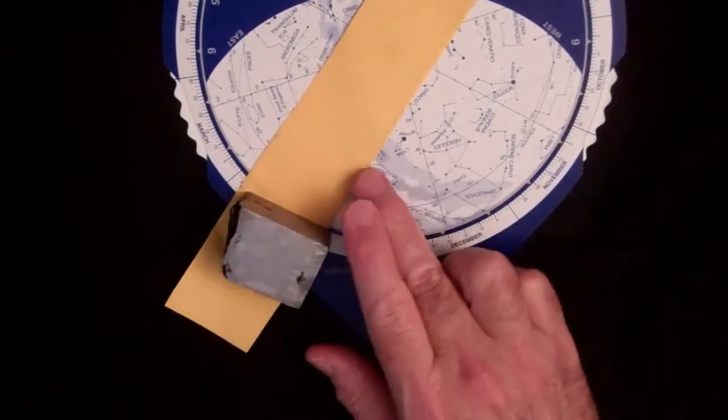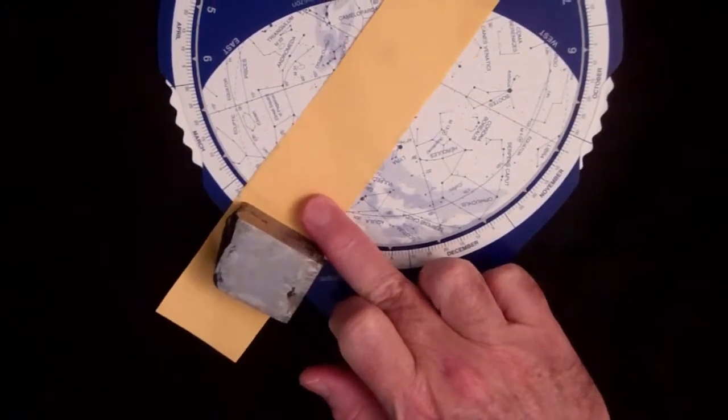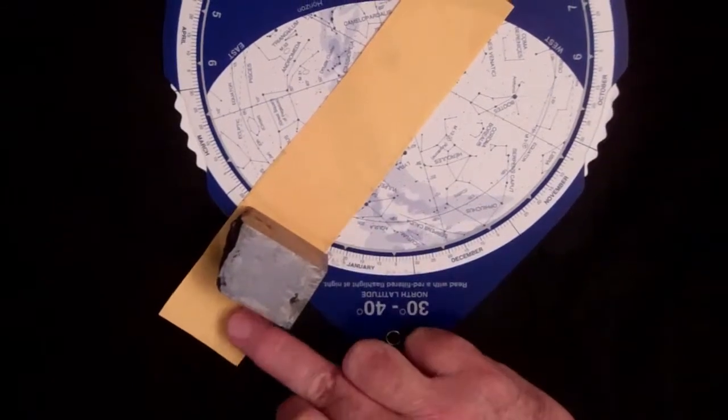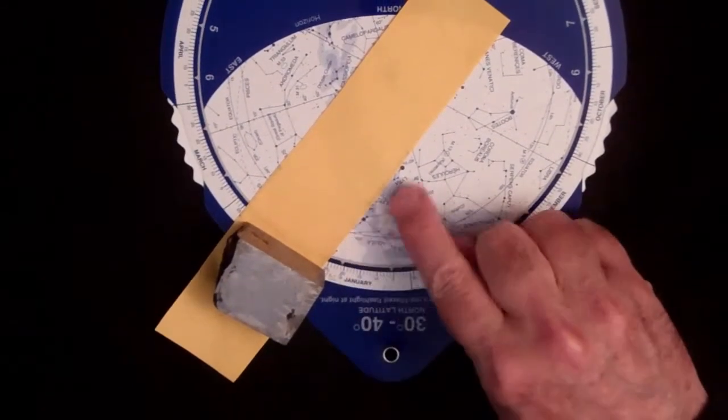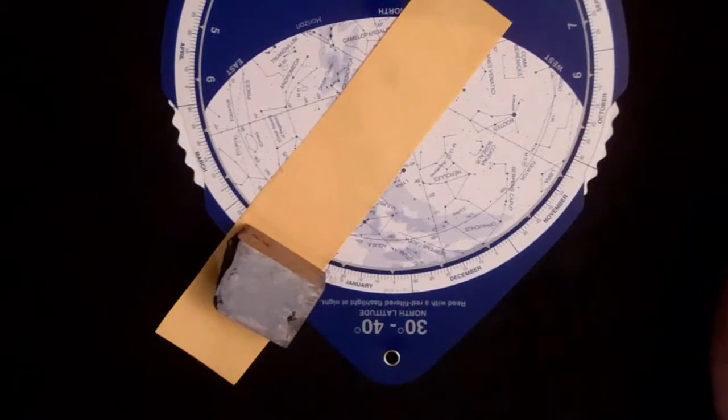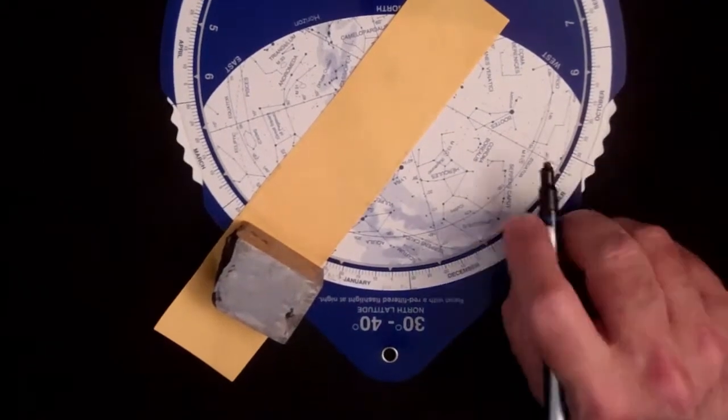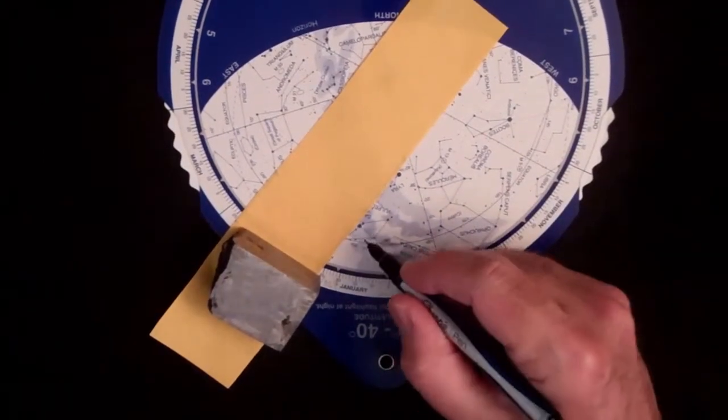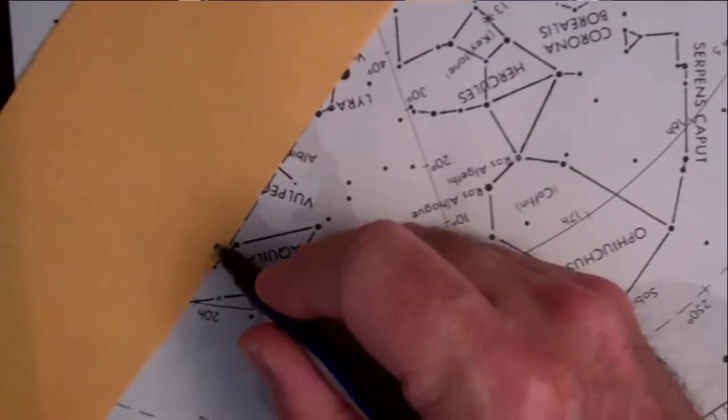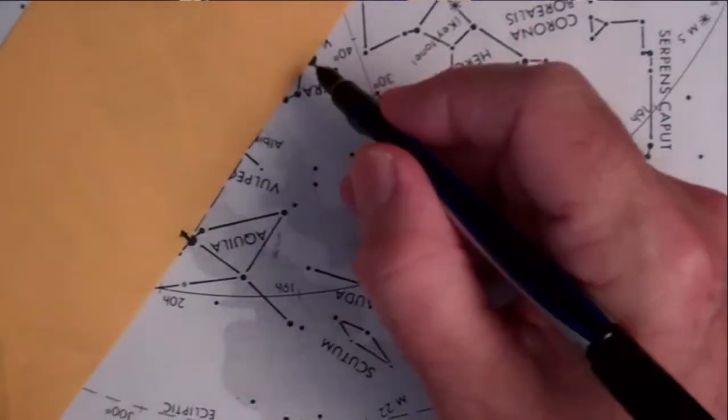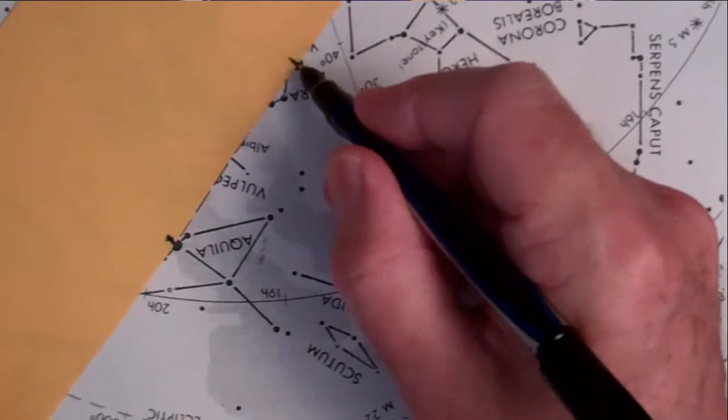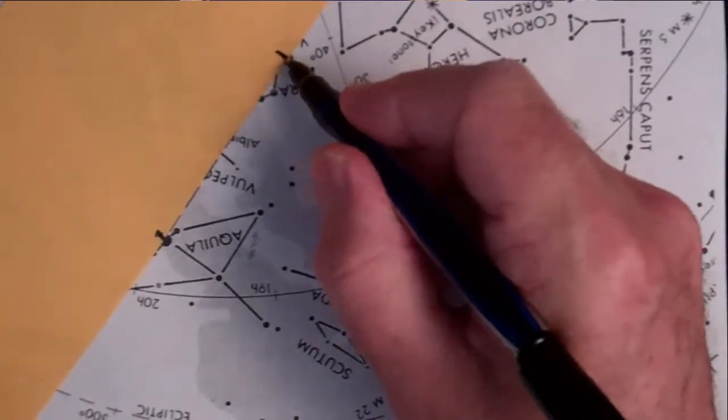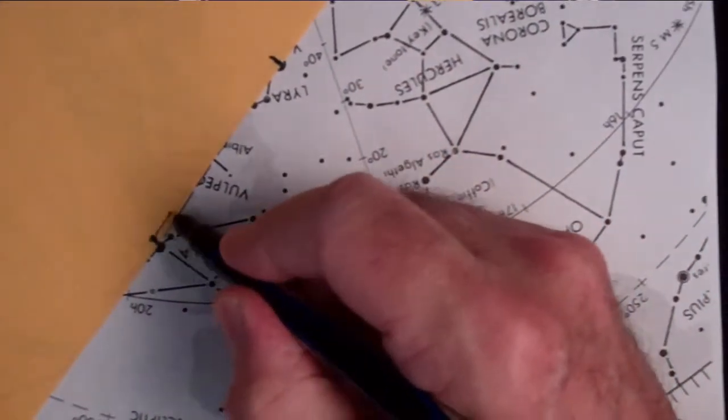Alright, so we line up the piece of paper along the two stars there. And then we're going to trace the positions, the position of Altair and mark the position of Vega up here, and draw a line segment between them.